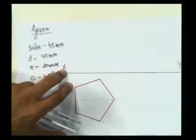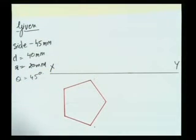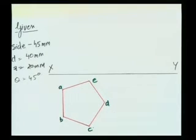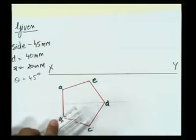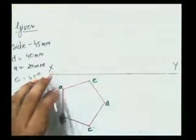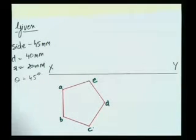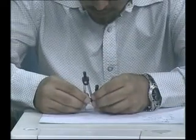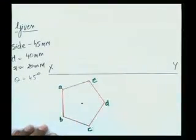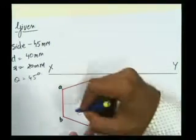This is the pentagon I have. I had turned the page so that I could make you understand how I'm drawing it. Now I'll mark the points as A, B, C, D, and E. I already have one perpendicular bisector, so I'll drop a perpendicular from here — this gives me the center of the pentagon. With that I need to draw a circle of diameter 40 mm, so the radius would be 20 mm from this center.